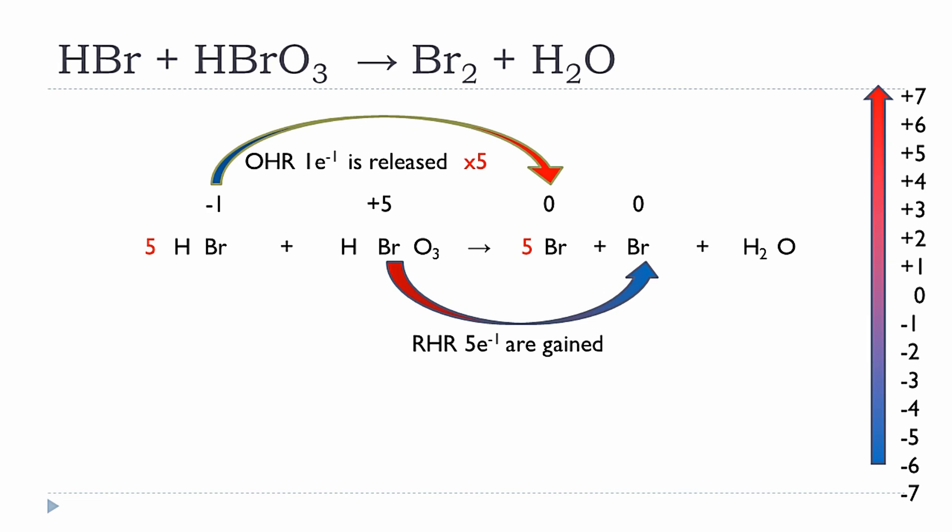If you count bromine atoms on both sides, they are balanced — six on each side. The remaining unbalanced element is oxygen: HBrO3 has three oxygens on the left, but only one water molecule on the right. Adding a coefficient of three to H2O gives three moles of oxygen, balancing the oxygen atoms. Checking hydrogen: on the right, three times two gives six hydrogens; on the left, five from HBr plus one from HBrO3 also gives six. Hydrogen, bromine, and oxygen are all balanced.